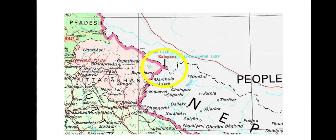Since the India-China War of 1962, Kalapani has been controlled by India's Indo-Tibetan Border Police. Nepal claims that the river located to the west of its territory is the main Kali river and thus falls within its territory. India claims the ridge line towards the east of Kalapani territory, and hence includes it within the Indian Union.